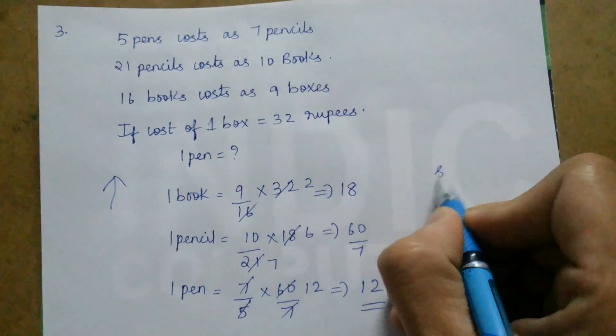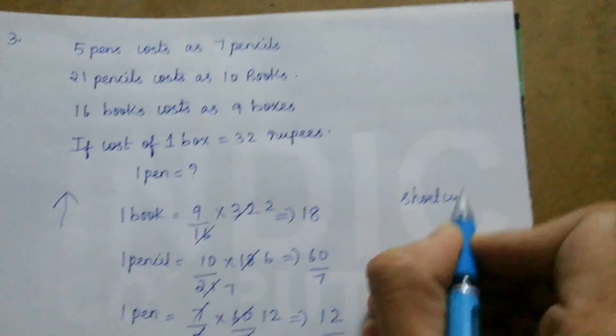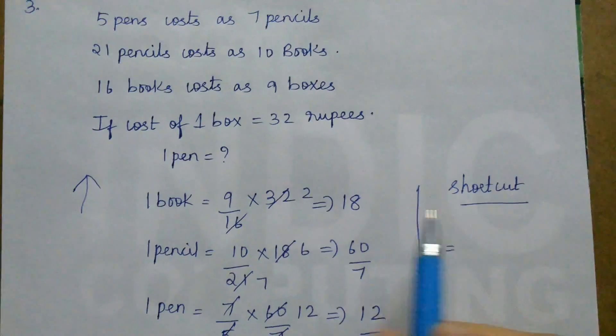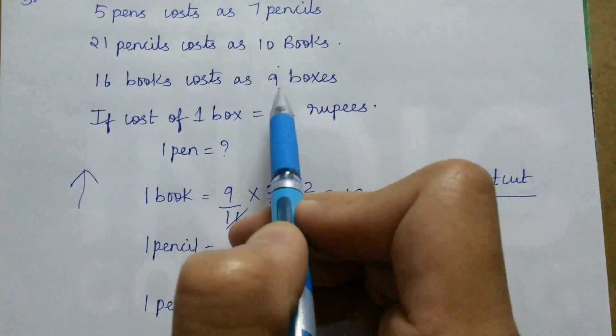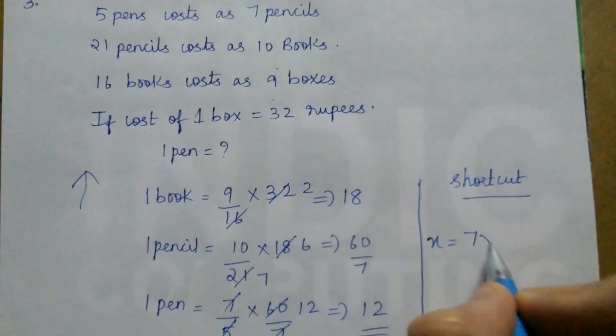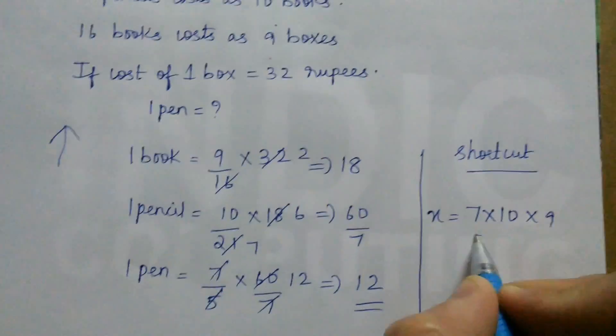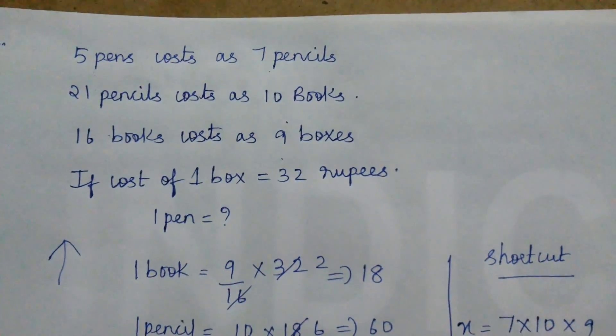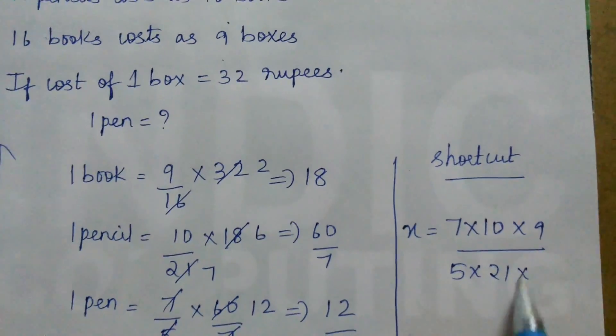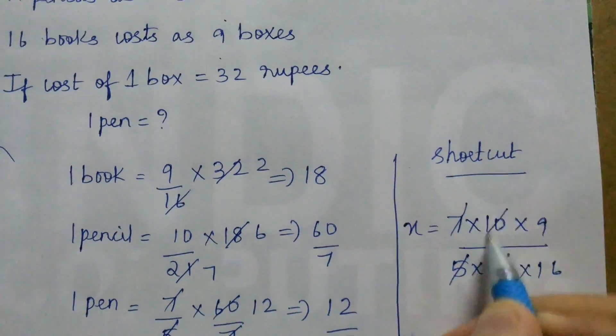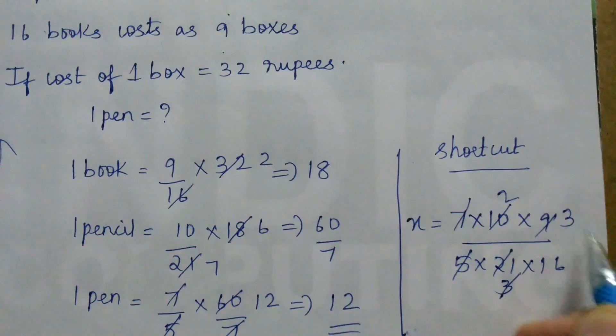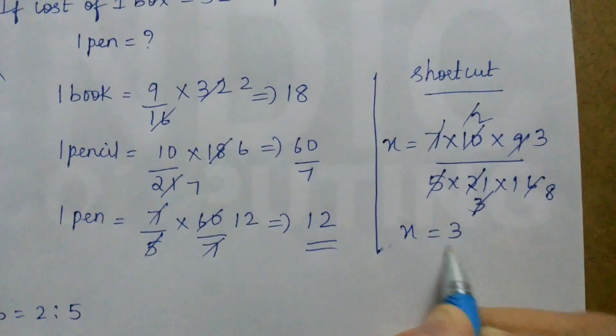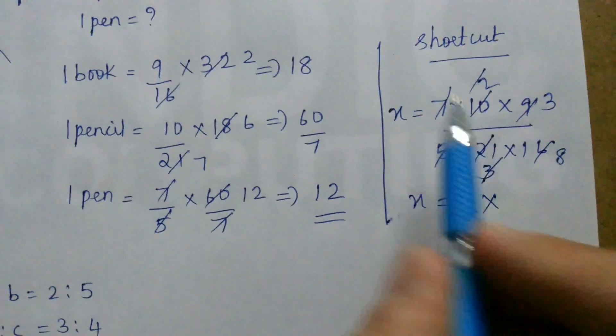But we also have a shortcut method. That is, let us take the cost of pen as x. Just multiply all the right hand side, that is 7, 10, 9 in the numerator, 7 into 10 into 9, and multiply all these in the denominator, that is 5 into 21 into 16. Now 7 3s are, 5 2s are, 3 3s are, 2 8s are. So we get x is equal to 3 by 8 times the number of box.